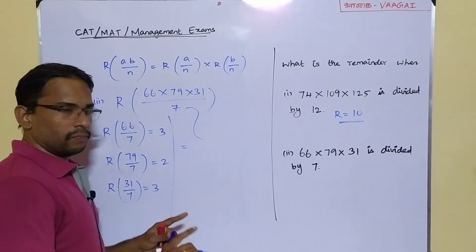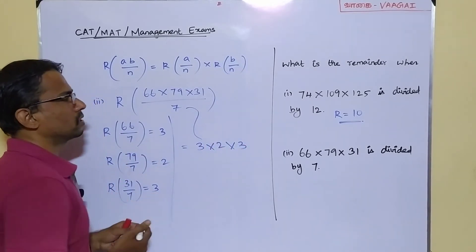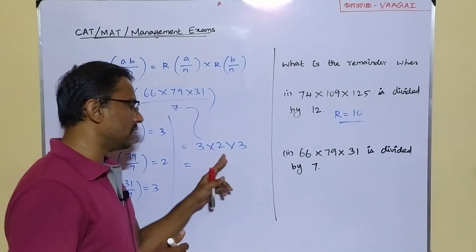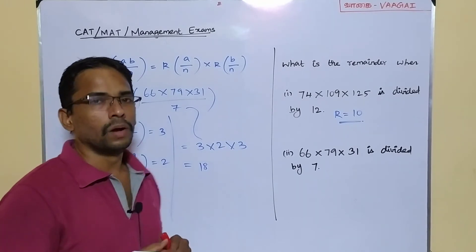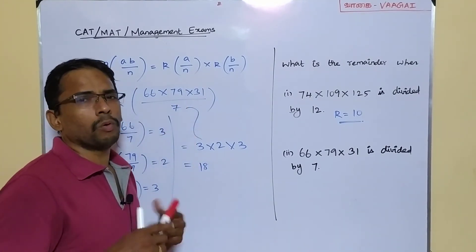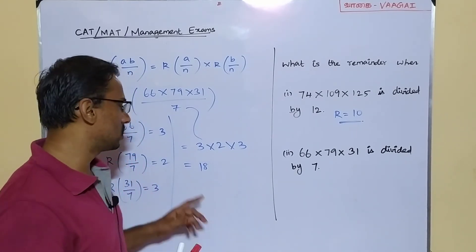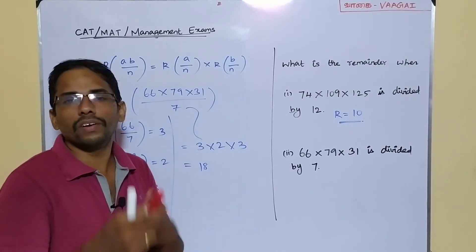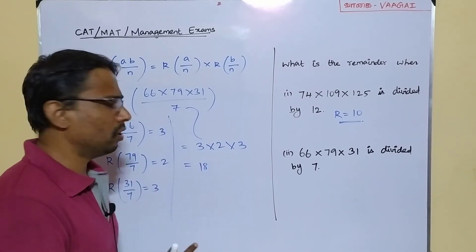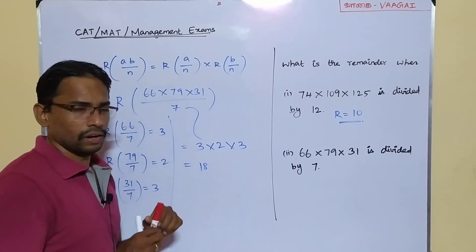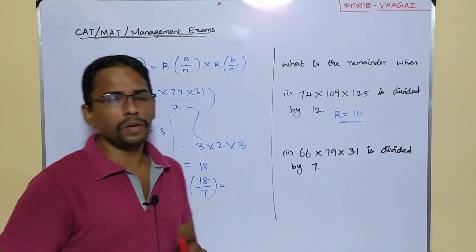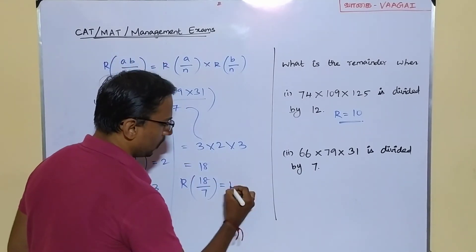To get the overall answer, we multiply the individual remainders: 3×2×3 = 18. But wait — can we get a remainder of 18 when dividing by 7? That's impossible, because a remainder must be less than the divisor. So we take the remainder of 18 divided by 7: 7×2=14, and 18−14=4. So the final remainder is 4.